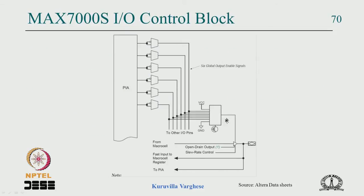The MAX 7000 S IO control has a tri-state gate at the IO pin. A MUX allows permanently enabling, permanently disabling, or selecting various output enable sources from the crossbar. Multiple output enable pins come into the crossbar, and either a crossbar signal or a product term from another block can control the IO pin's tri-state status — adding significant flexibility.